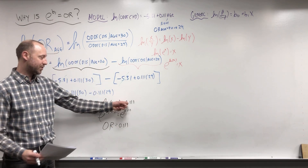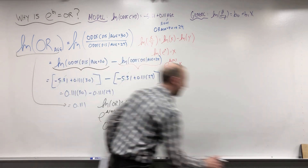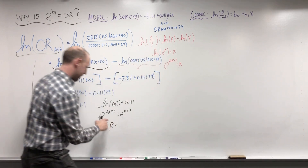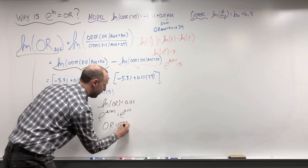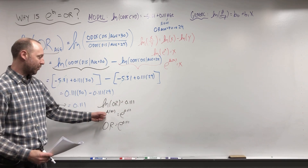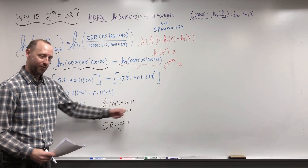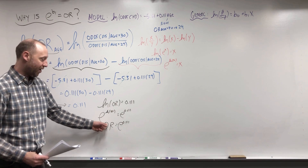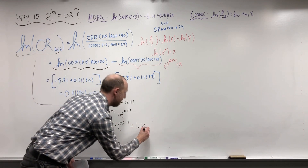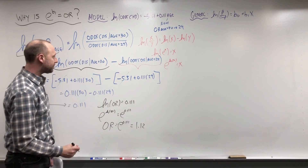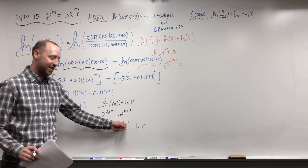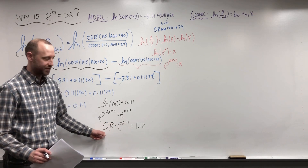The log odds ratio is .111, the exponent of the log odds ratio is e to the .111, or the odds ratio is e to the .111, which we saw previously came out to be 1.12. Hopefully this illustrates that exponentiating that coefficient gives us the odds ratio.